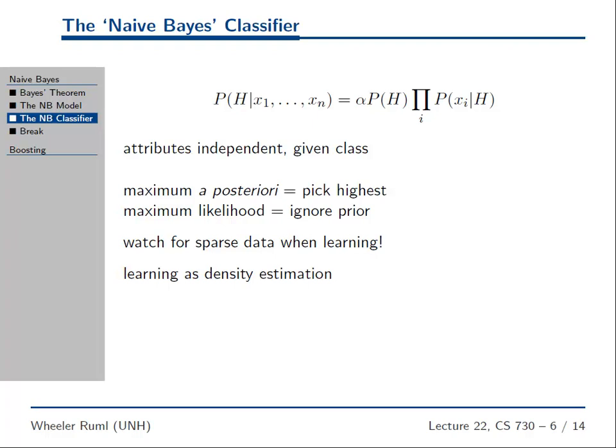This is called the sparse data problem. I suggest fixing it by smoothing your model using add-one smoothing. You may scoff at add-one smoothing, but it's easy and it works, and if you don't do it you're going to have these pesky zeros that will mess you up.